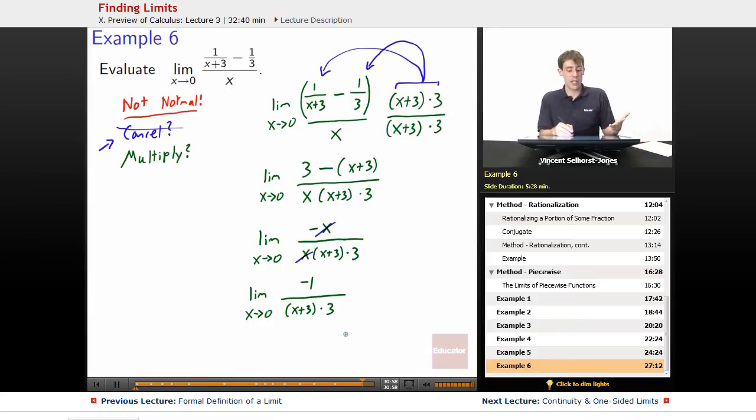Now, we ask ourselves, now that we've managed to cancel something, if we were to plug in a number, would it be normal now? If we plug in 0, we get negative 1 over 0 plus 3 times 3. Doesn't look like we're going to be having dividing by 0 any issues anymore. So, we have this is equal to negative 1 over 0 plus 3 times 3. Once it's not weird, we can plug in. Negative 1 over 3 times 3, that gets us negative 1 over 9. And there's our answer.